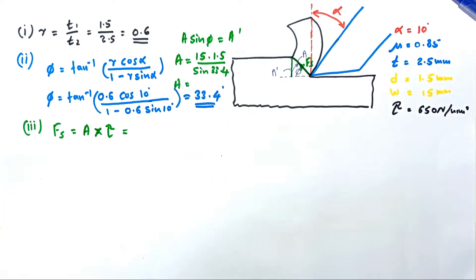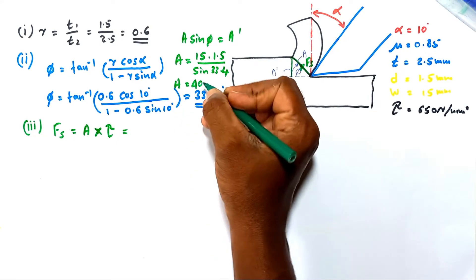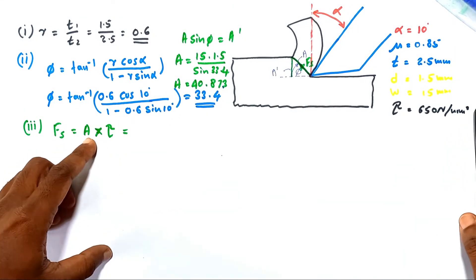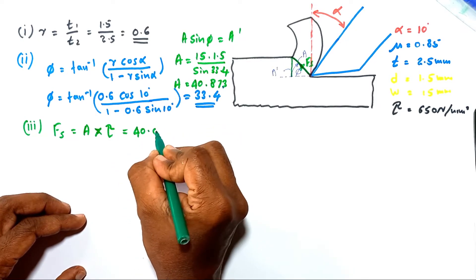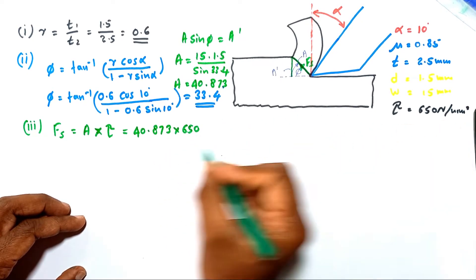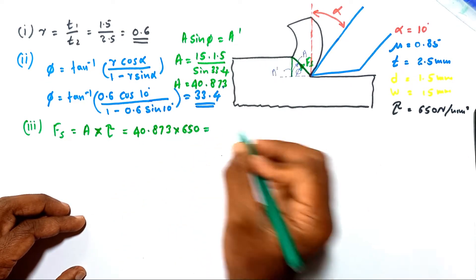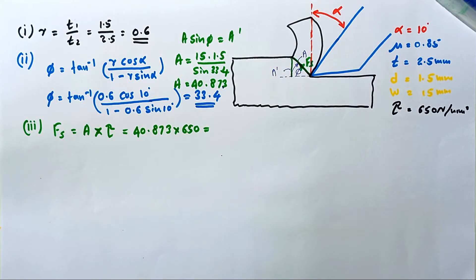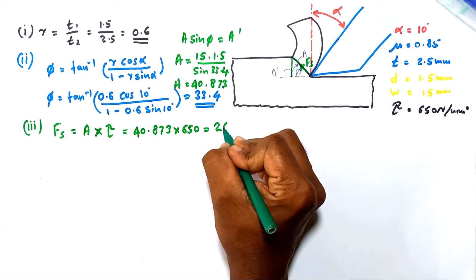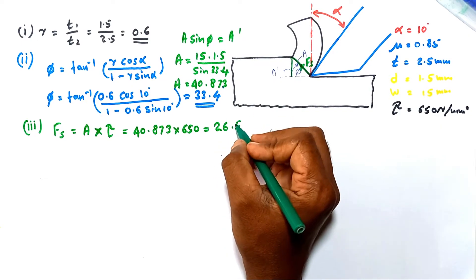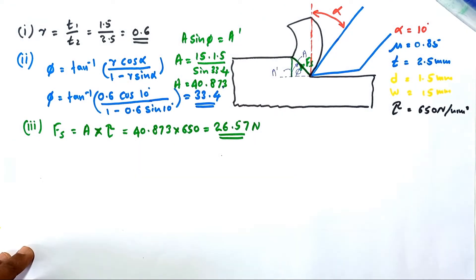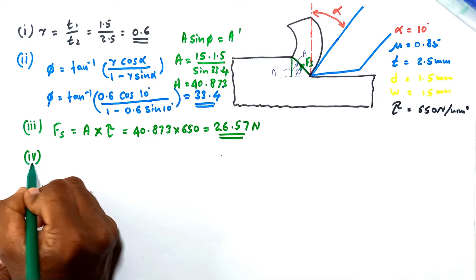Calculating the area: A = 75 / sin(33.4°) = 40.873 mm². Substituting into the shear force equation: Fs = 40.873 × 650 = 26,567 N, approximately 26.57 kN. This is the shearing force.